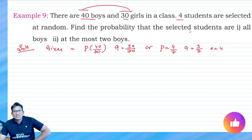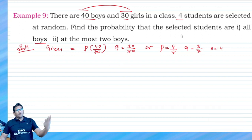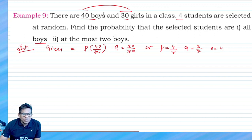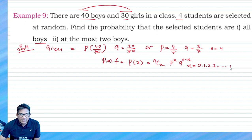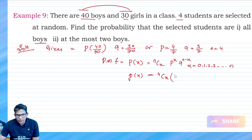Find the probability that the selected boys are all boys. Four boys are selected, n equals 4. We also need to find at most two boys — that means at most 0, 1, or 2. Our probability mass function is: P(x) = nCx * p^x * q^(n-x), where x = 0, 1, 2, ..., n. So here, P(x) = 4Cx * (4/7)^x * (3/7)^(4-x).